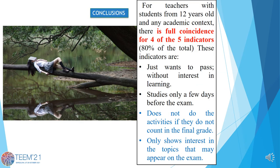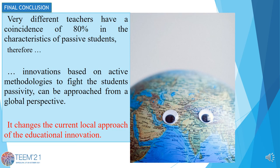Therefore, for teachers with students from 12 years old and in any academic context, there is full coincidence for 4 of the 5 indicators — 80% of the total. These are the 2 previously mentioned indicators plus 2 new ones: 'a student does not participate if it does not count in the final grade' and 'a student only shows interest in the topics that may appear on the exam.'